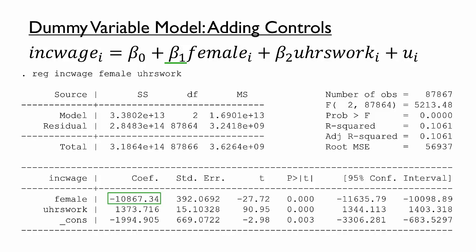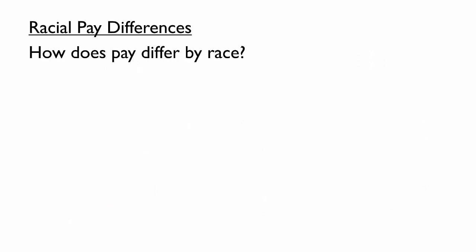Let's explore one more variation on dummy variable models by asking a related question. How does pay differ by race? To answer this question empirically, we'd clearly still need data on incomes, but we'd also need data describing race. Like gender, race is a qualitative characteristic, but race also has multiple categories. Accordingly, we can describe race using a set of dummy variables. For example, one dummy variable could indicate whether the individual is white.